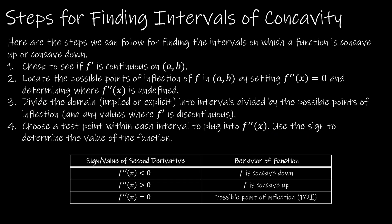The steps we're going to follow look a lot like the steps we did in our last video when we learned how to find intervals of increase or decrease. First, we verify the function is continuous over an interval. Then we locate the possible points of inflection by setting the second derivative equal to zero, and also where f double prime is undefined or where f is undefined. Then we divide the domain into intervals based on those possible points of inflection and choose a test point. If f double prime of x is less than zero, then f is concave down. If f double prime of x is greater than zero, then it is concave up. Any time the second derivative equals zero, that's a possible point of inflection.